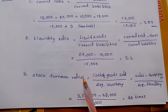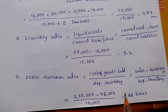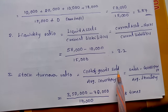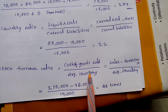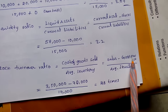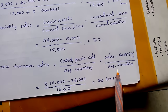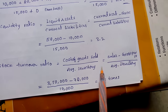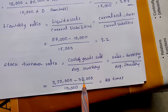Next is the stock turnover ratio, which is nothing but the inventory turnover ratio. The formula is cost of goods sold divided by average inventory. Here sales is 36,000.